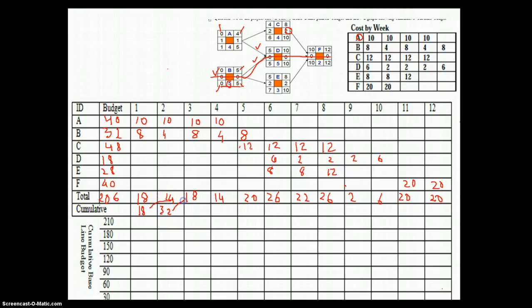And then 22 add 18. So by end of month 3, the cumulative requirement would be 50. Moving on 50 add 14, 64, 64 add 20, 84.